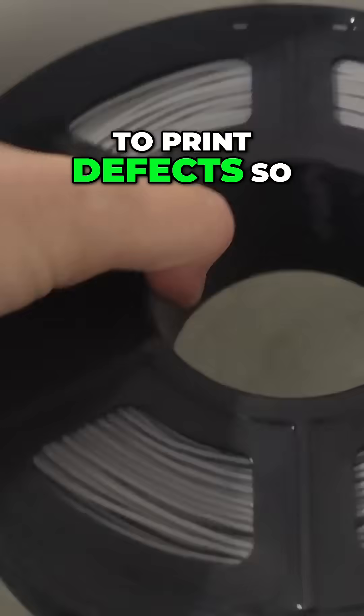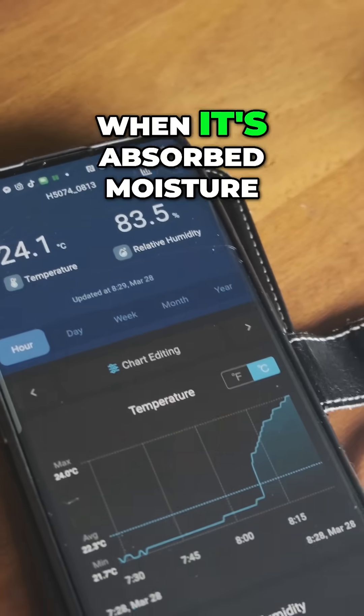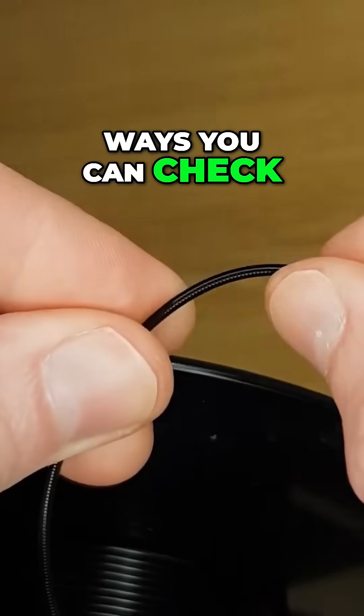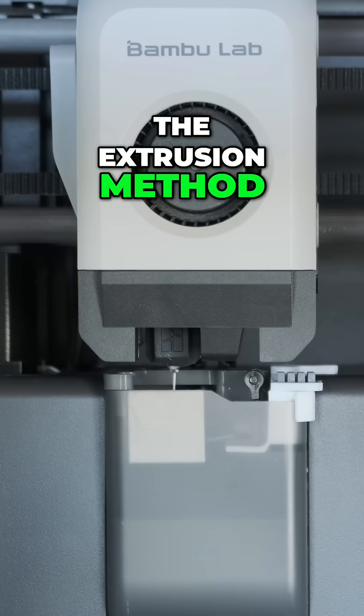Wet filament can lead to print defects, so it's important to know when it's absorbed moisture and how to dry it properly. There are two main ways you can check: the snapping method and the extrusion method.